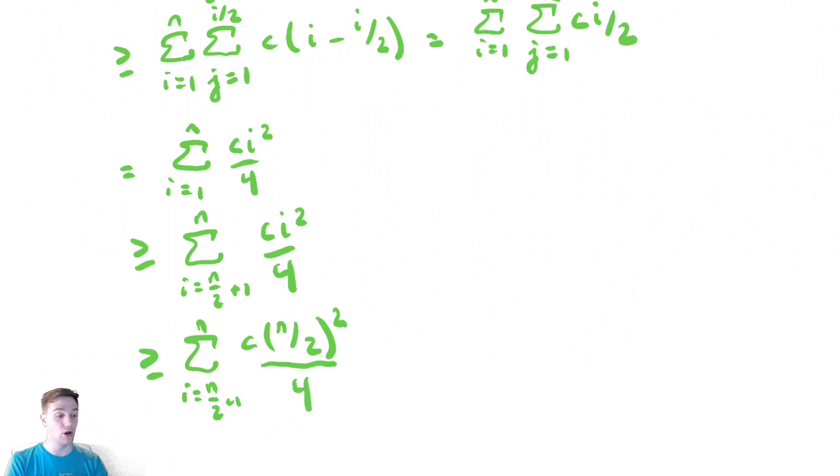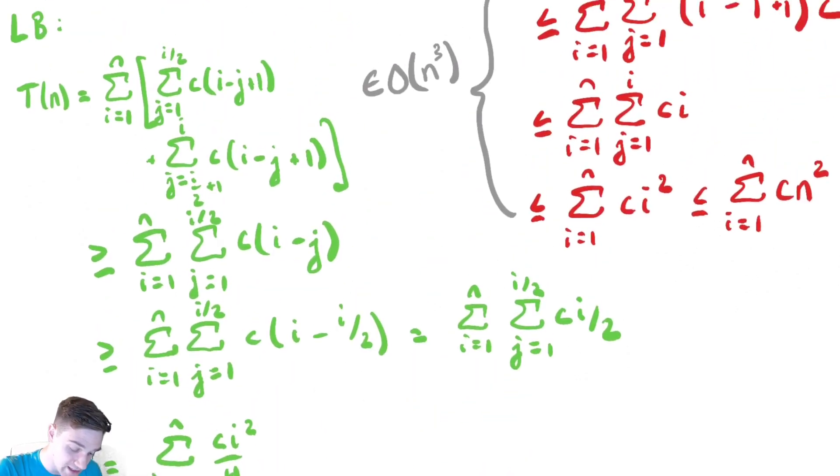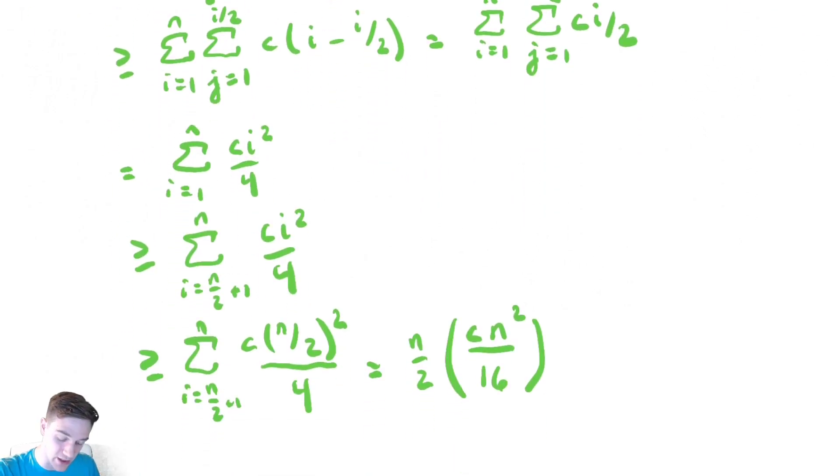Now we've eliminated all of the loop variables from the summations, so now all we need to do is simply do the arithmetic to simplify. There are n over 2 terms there, and we have c n squared over 2 squared and 4 combined to give me a 16 there. So all of that mess in green looks like it's led me to the conclusion that I am in big omega of n cubed.